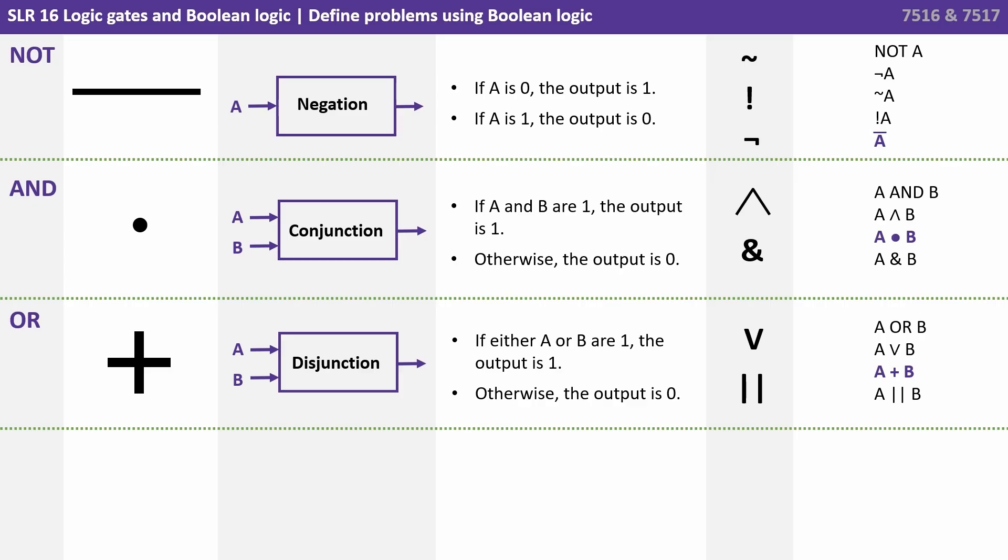Next we have OR or disjunction. Again, two inputs, and if either input A or B are 1, then the output is 1. Otherwise, the output is 0. OR is represented by the plus symbol. Again, in the second to last column you see variations of the OR symbol. On the far right hand side you see some examples of how the expression can be used. The one in purple is the one using the symbol AQA will use in the exam.